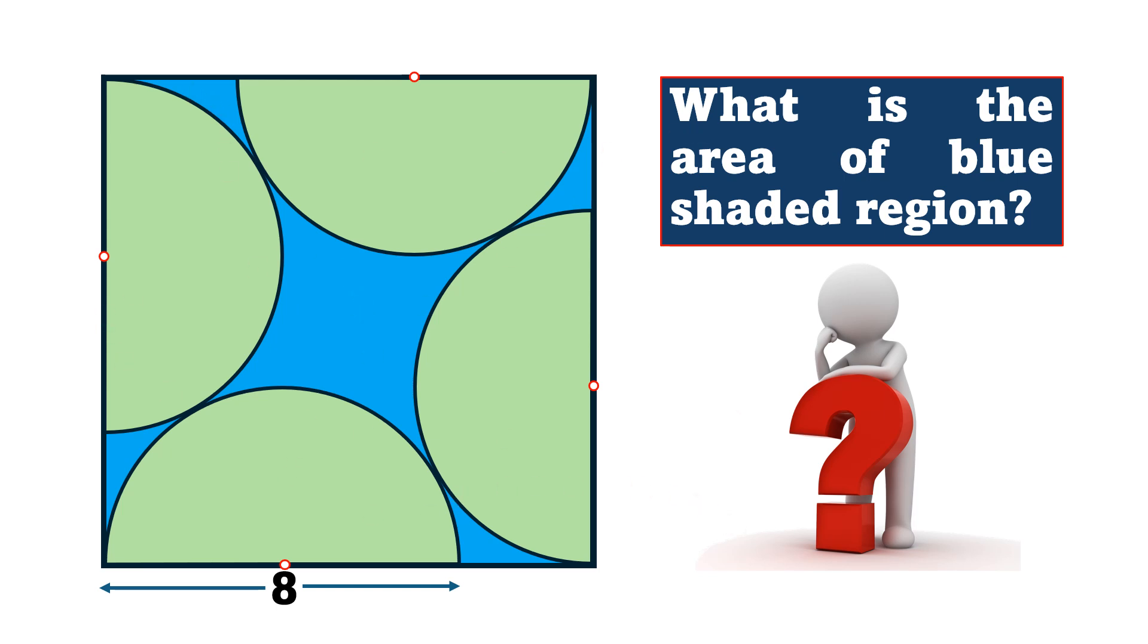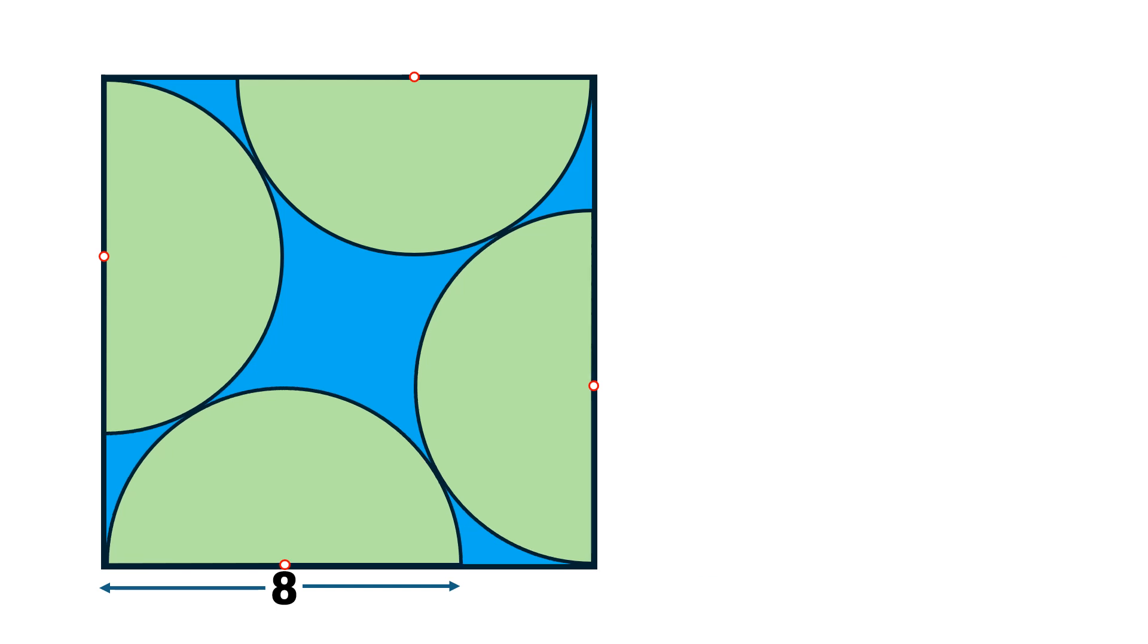So let we move toward the solution. First of all, we label the vertices of square, we draw a line segment from the center of one semicircle to this semicircle and let we label the corner points of this line segment which are actually the center of semicircles as P and Q.